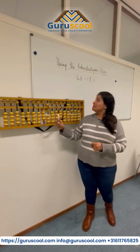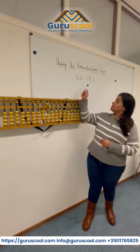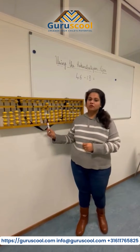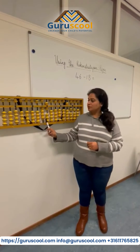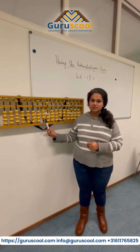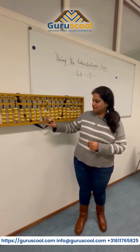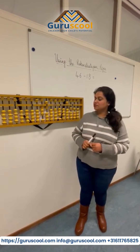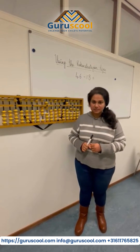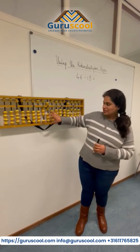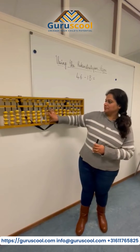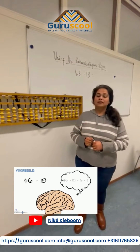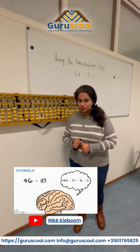We have the sum here: 46 minus 80. We are going to put it on the Abacus. So we are going to put 46. We take away 10, that leaves us with 36. We take away 6, that leaves us with minus 2.